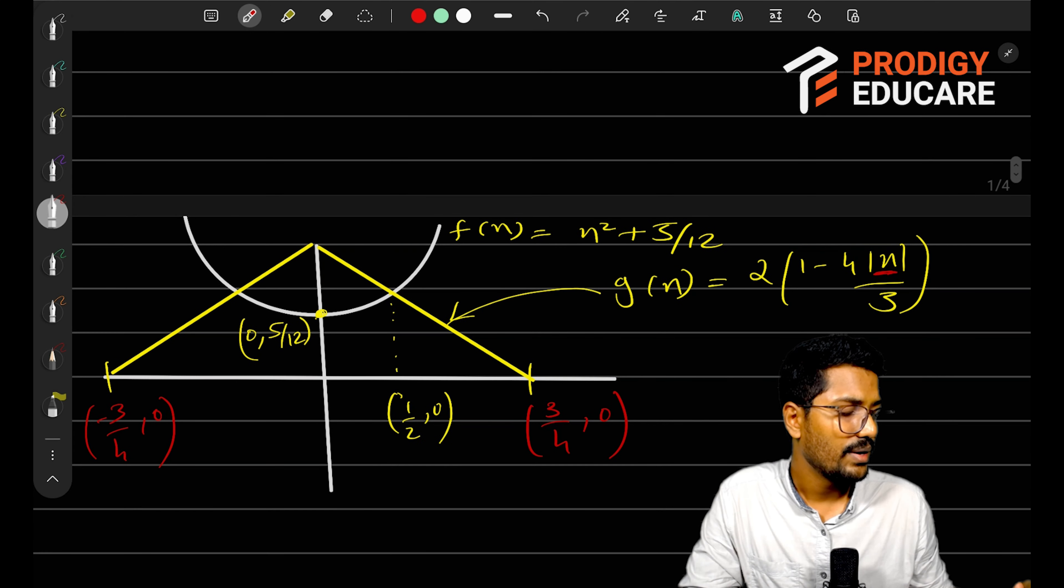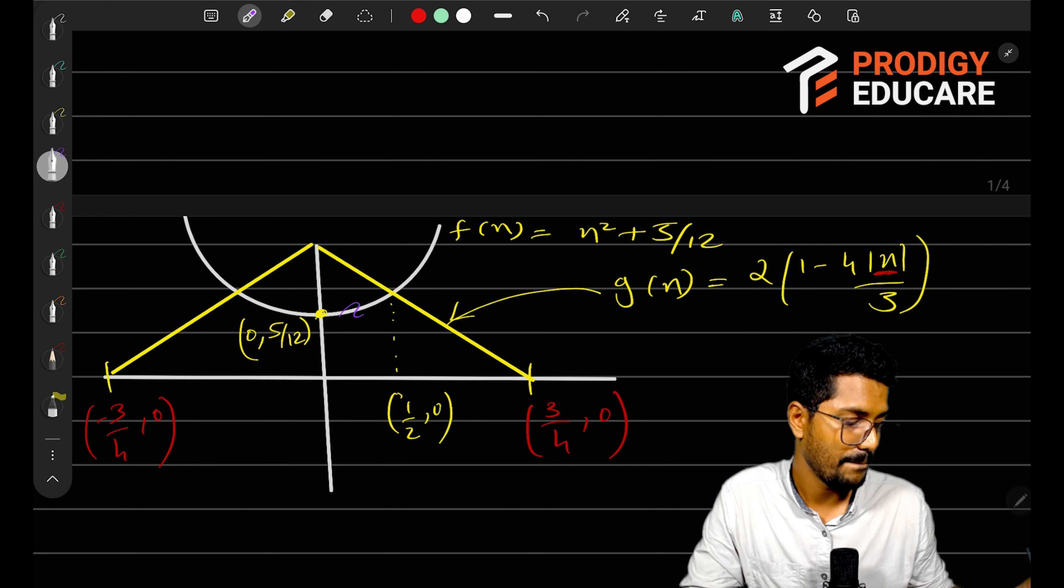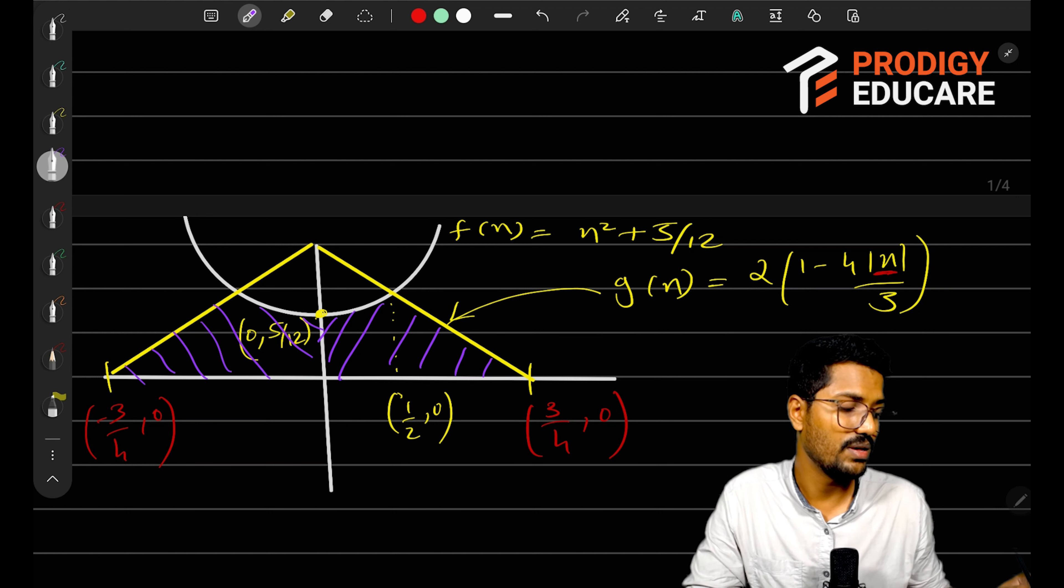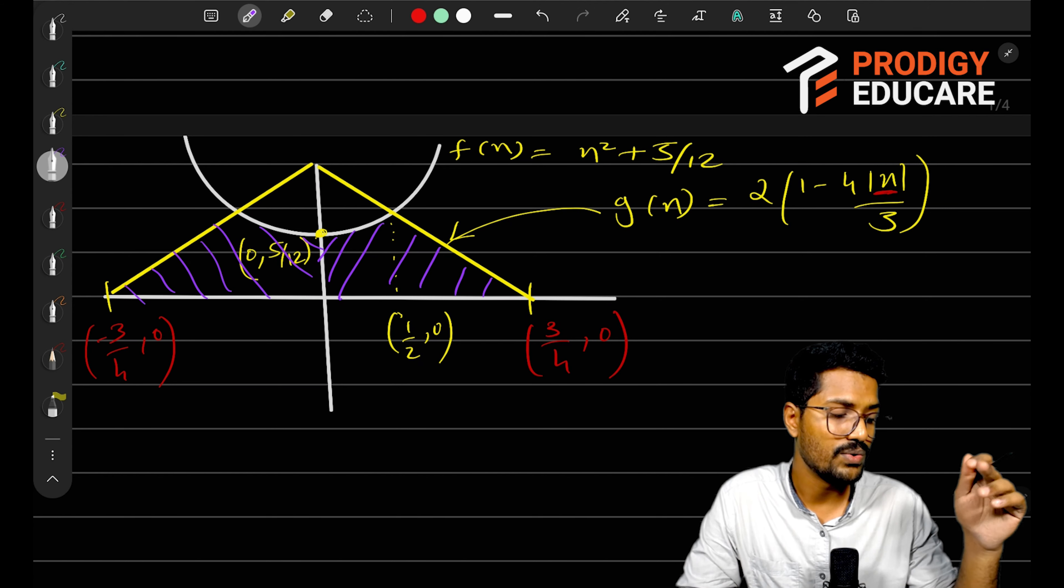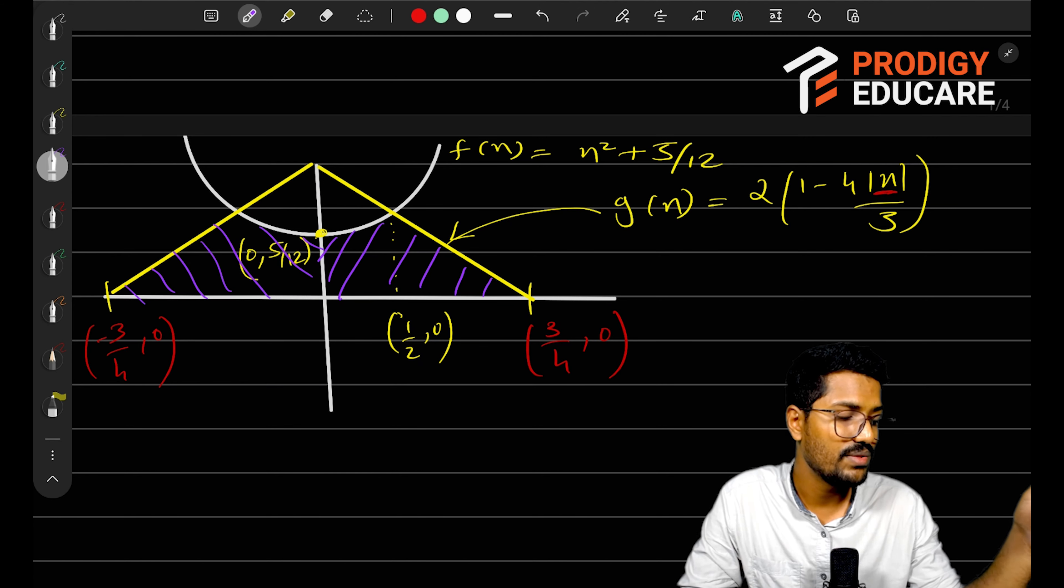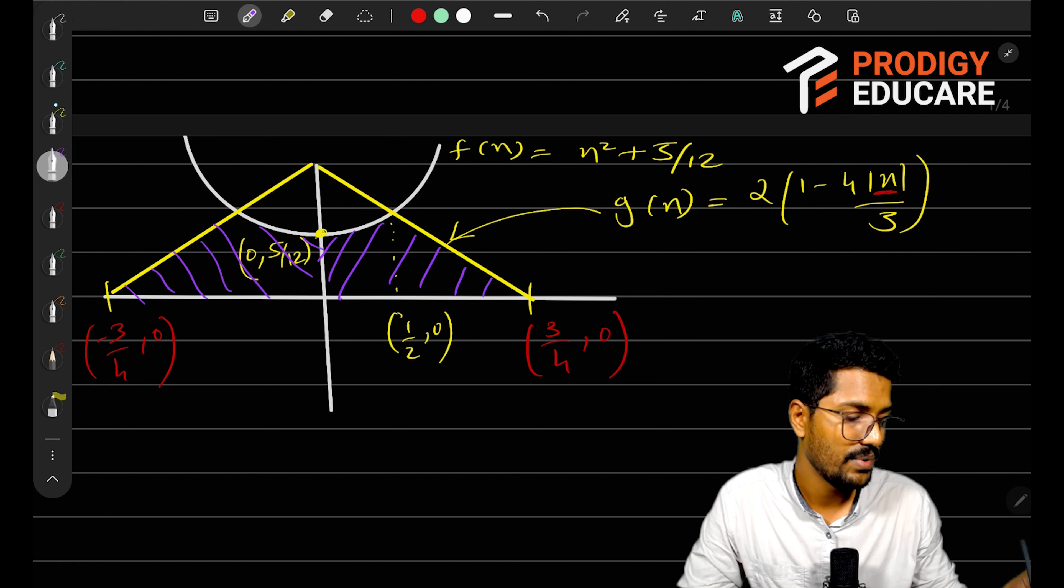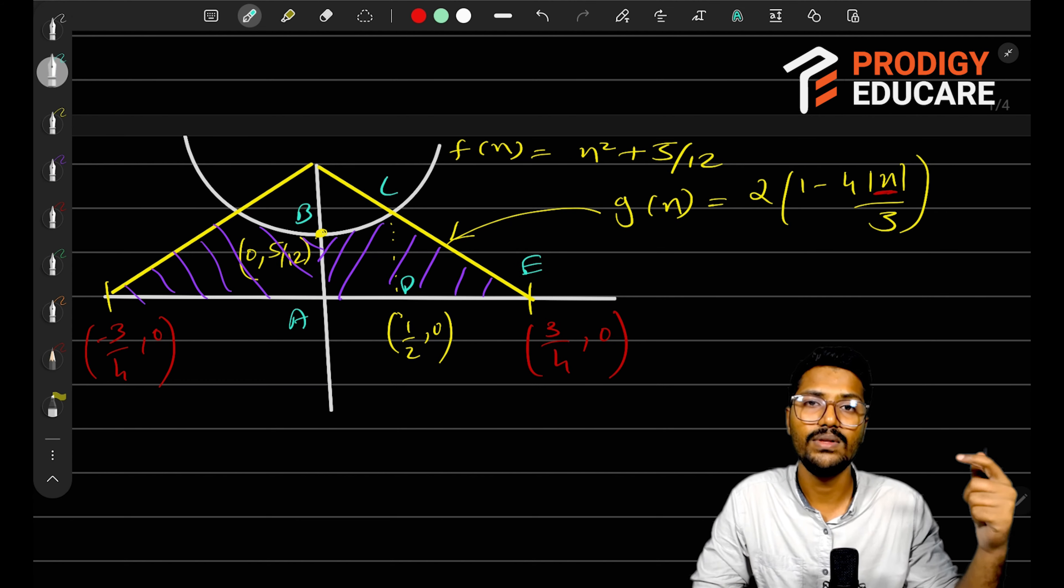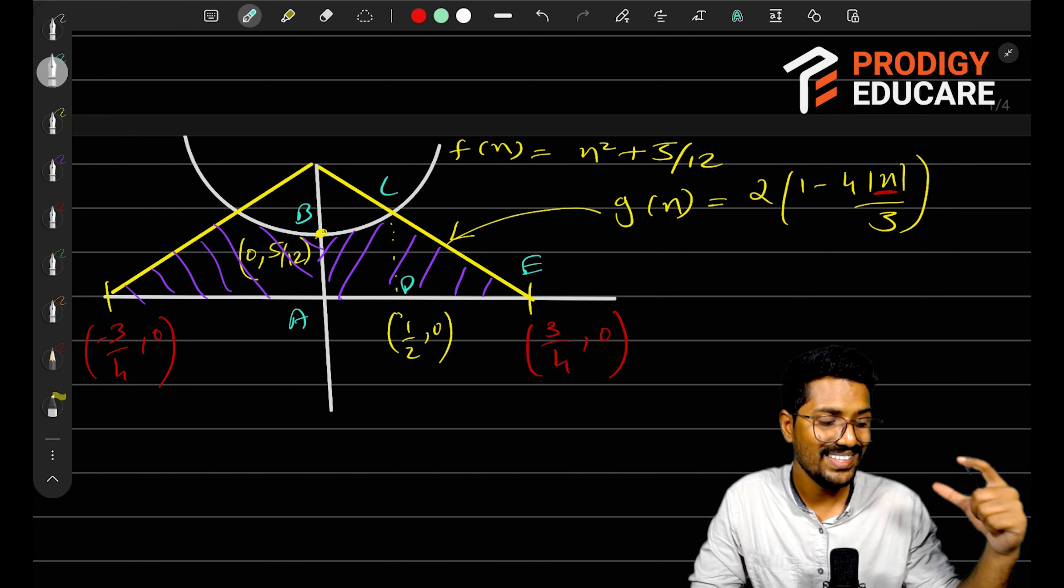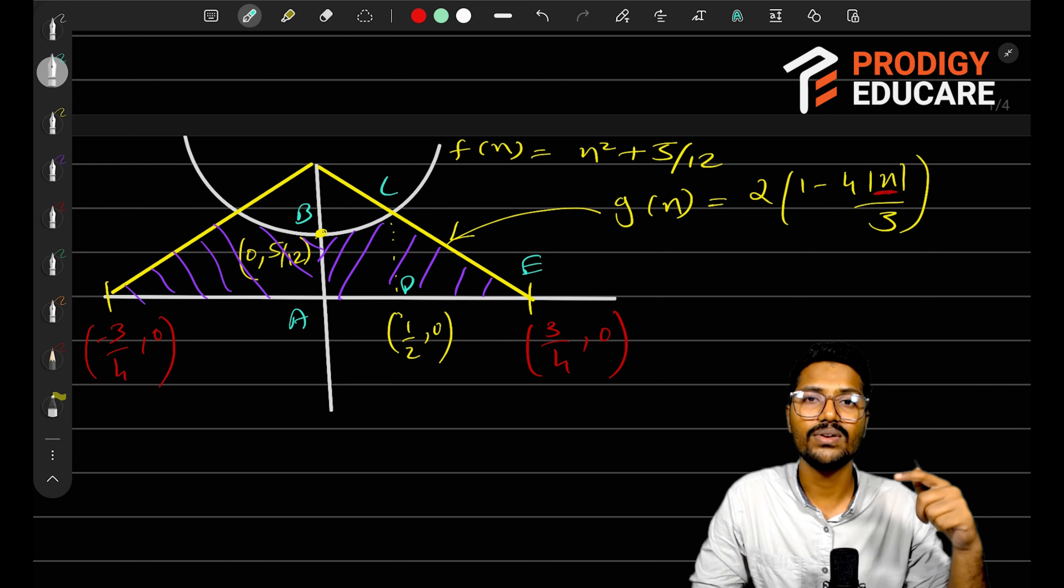Now, which area do we want? We want this area - the area between f(x), g(x) and the positive direction of the x-axis. This is the area which we want. How will we find this area? Separate this into two parts. One is the area under the parabola and one is this triangle. If I name them: A, B, C, D, and E. ABCD is the area under the parabola and CDE is a triangle. Triangle's area can be directly found.